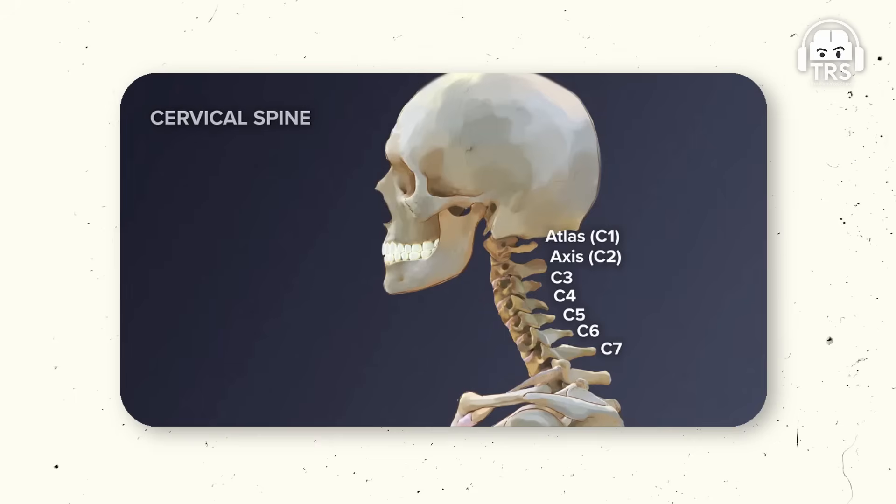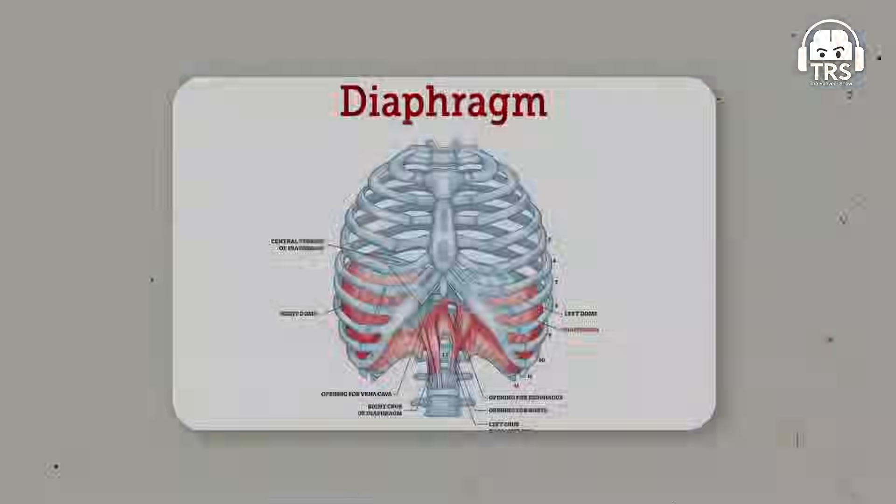The medulla oblongata is closely associated with the ability to breathe as well. So both these things happen simultaneously where your neck actually snaps. The medulla oblongata is the highest part beyond the spinal cord where the respiratory center is also involved. That's why I said that cervical spine C3, C4, C5 — that is cervical 3, 4, 5 — keep the diaphragm alive.